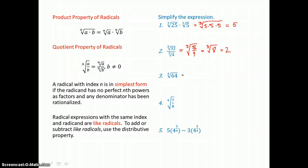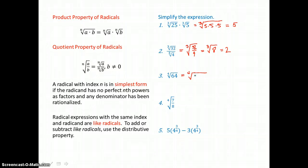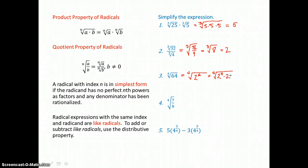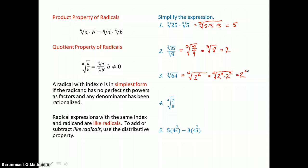Let's simplify the fourth root of 64. We're looking for 4 factors alike in 64. But if you factor 64, you'll find that it's made up of 6 factors of 2. And for every 4 factors of 2, 1 will come out of this radical. So I'll split up those factors of 2, and I'll take the fourth root of 4 factors of 2 and get 2. And that'll leave the fourth root of 2 factors of 2, and 2 squared is 4.